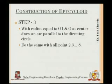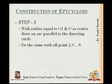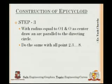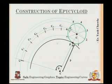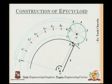With O as center and radius equal to O1 (through each division point on the rolling circle), draw arcs parallel to the directing circle — one for each point 1 through 8. These blue curves, parallel to the directing circle, are now visible passing through all the division points.